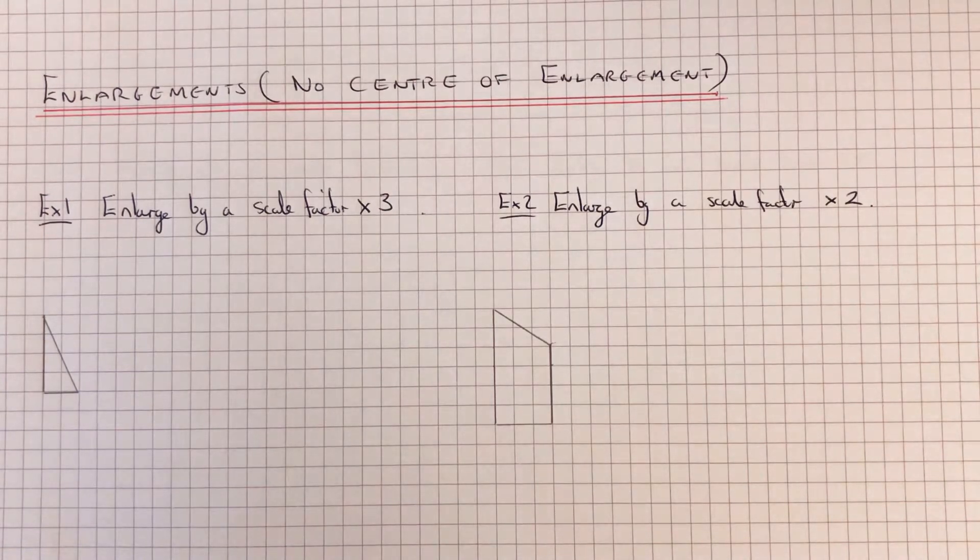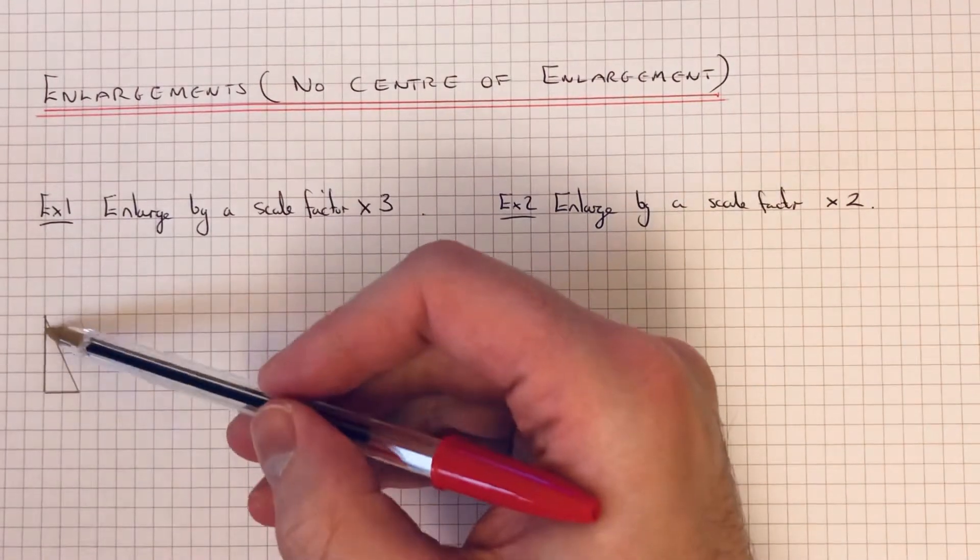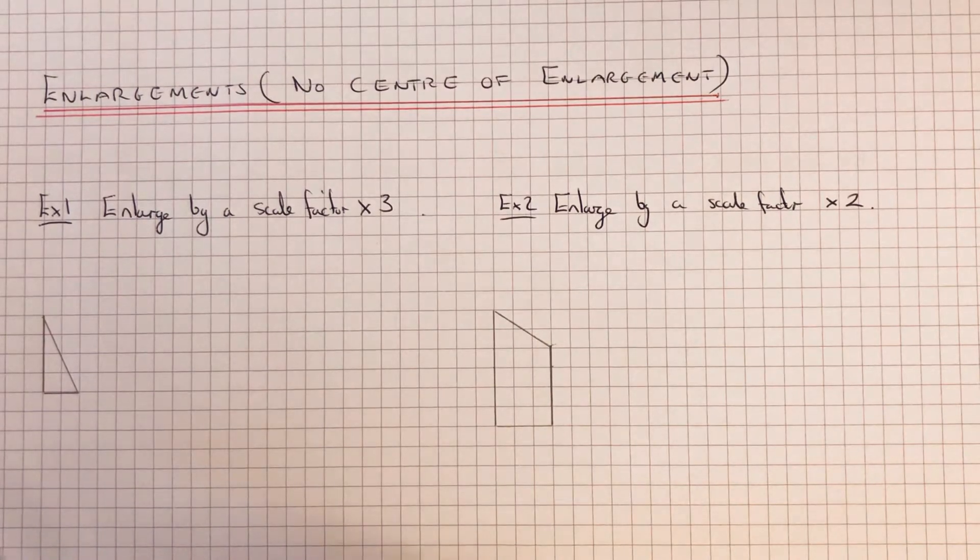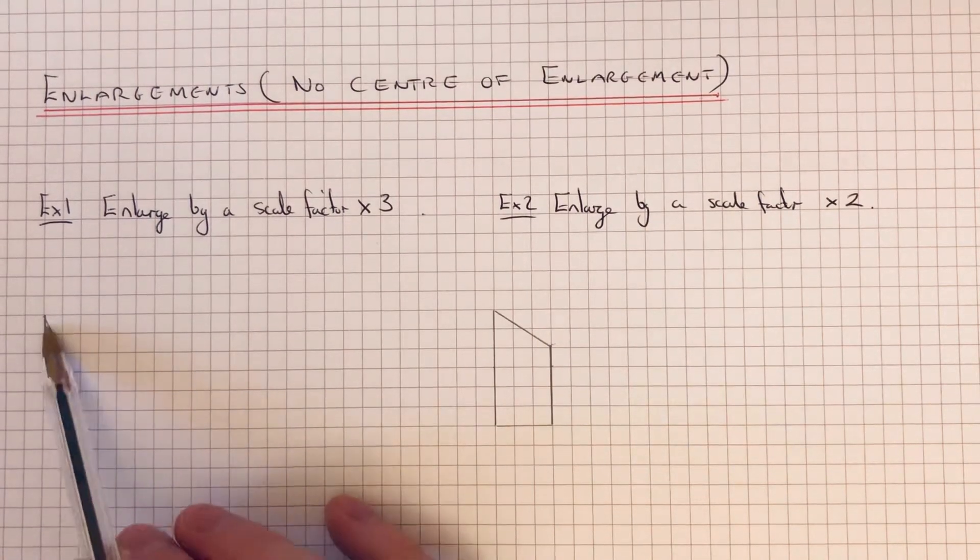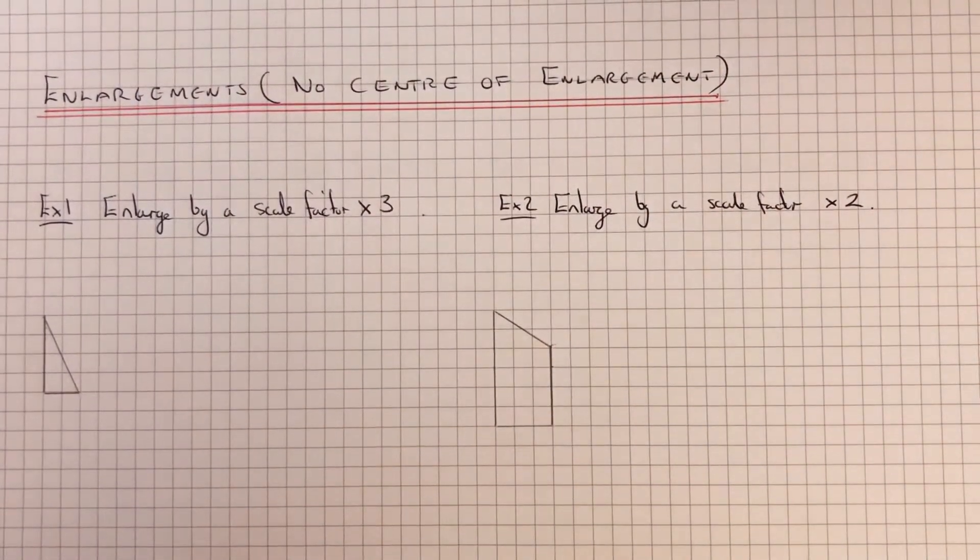So let's have a look at example 1. We've got to enlarge the shape by a scale factor times 3. The scale factor means we've got to make all the side lengths of our triangle three times as long. Now it's always best to start off with the horizontal or vertical lines of the shape and leave the sloping ones until last.